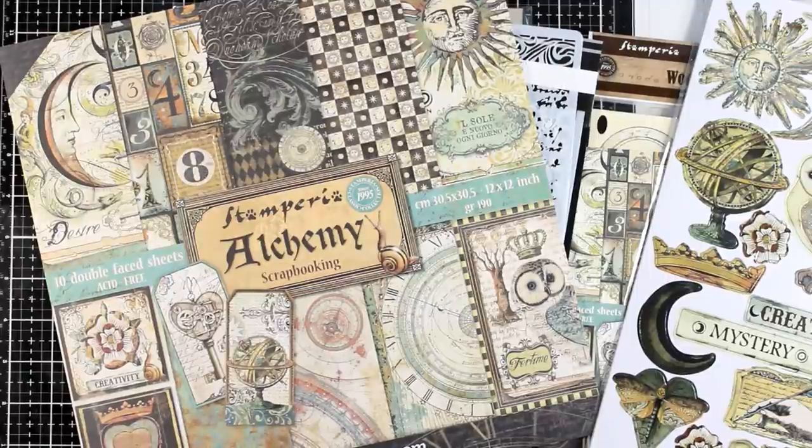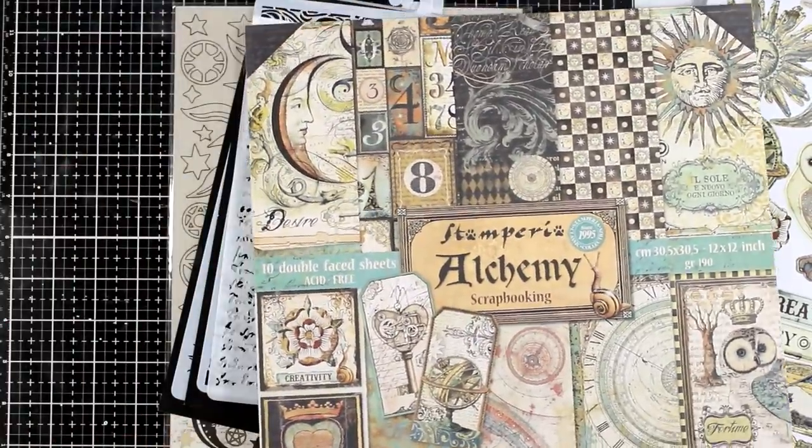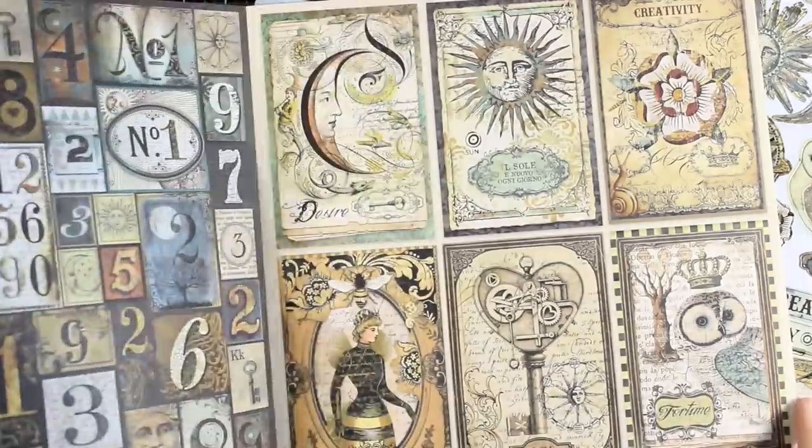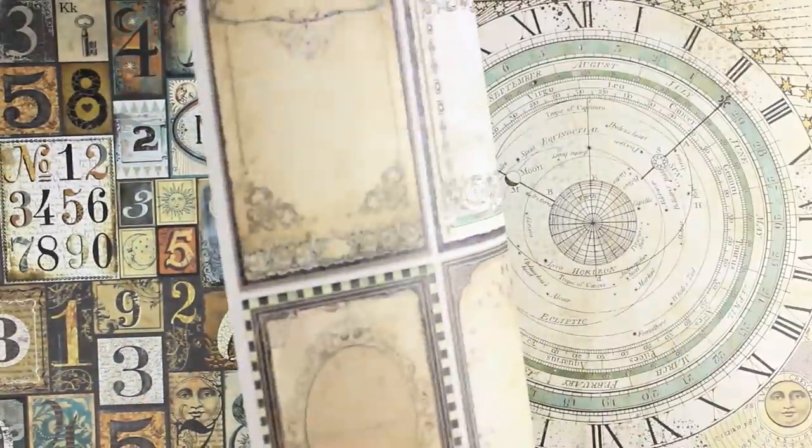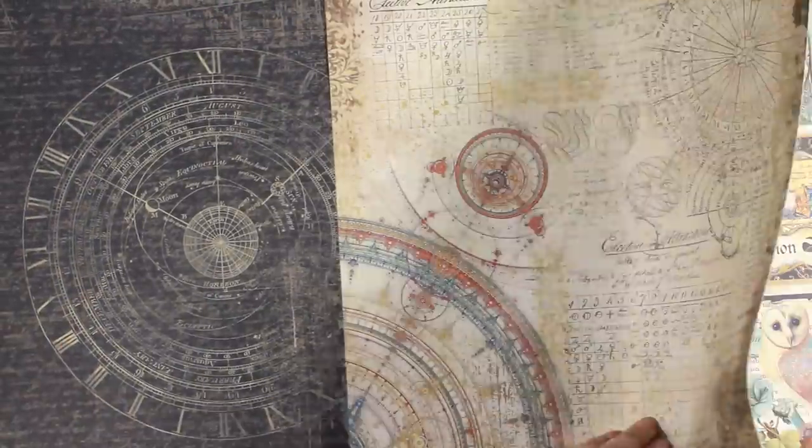Hi everyone and welcome back to another Mixed Media project! Last week I shared a video on how you can create a shadow box from pattern paper, and again today I'm playing with pattern paper. I have the Stamperia Alchemy Collection here, this is the 12x12 pad, and I'm going to share a new shadow box using the pattern paper.